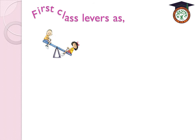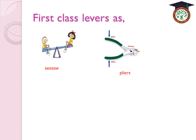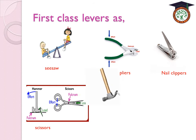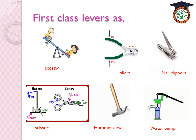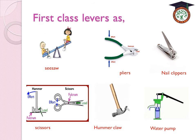Examples of first-class levers include the seesaw, pliers, nail clippers, scissors, the hammer claw, and the water pump. The hammer claw is a first-class lever because the fulcrum is between the effort force and resistance force. The seesaw is a first-class lever because the fulcrum lies between the effort force and the resistance force.